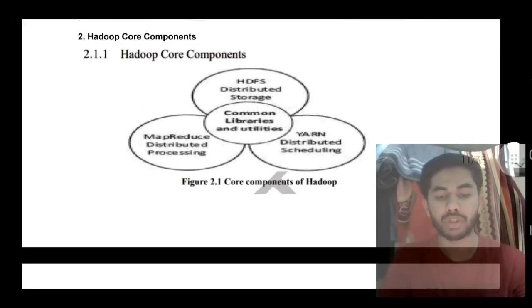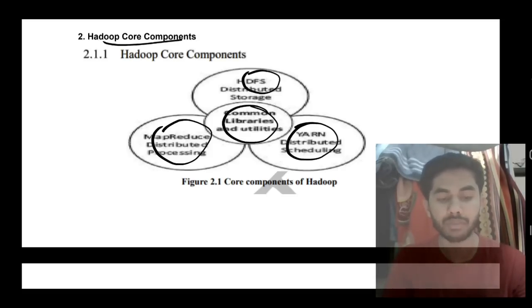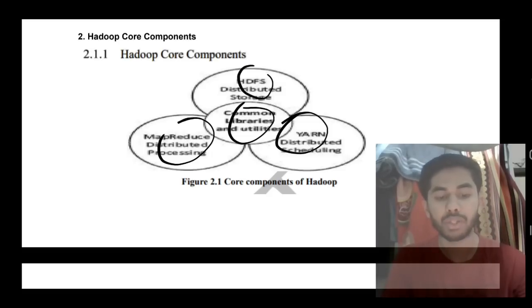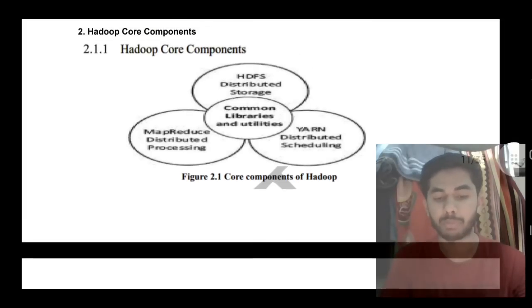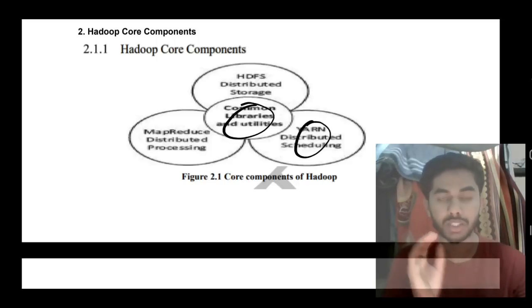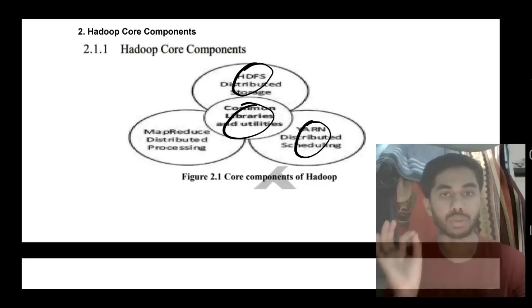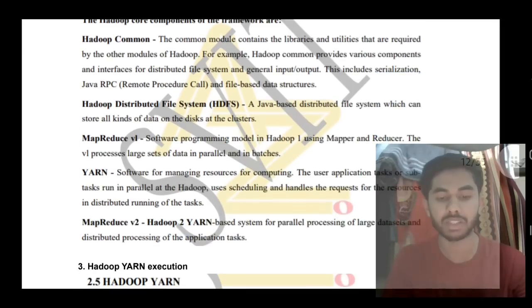Moving on to the second super important question: Hadoop core components. First, make this architecture with four things: Common Libraries and Utilities, YARN, HDFS, and MapReduce. Common Libraries and Utilities are required for execution, YARN is used for scheduling and resource management, HDFS is for storage purposes storing different kinds of files, and MapReduce is the same thing discussed in the previous question.